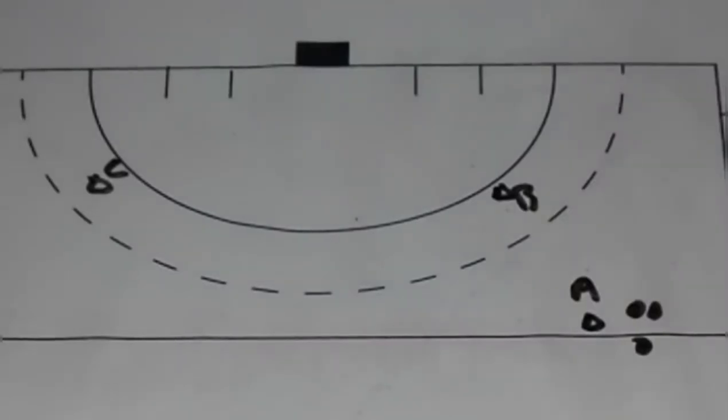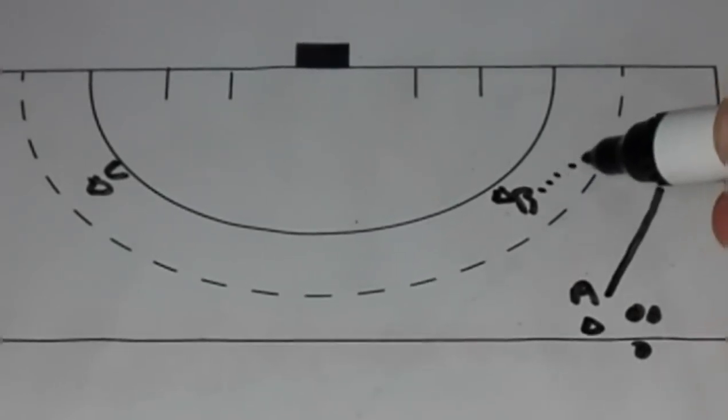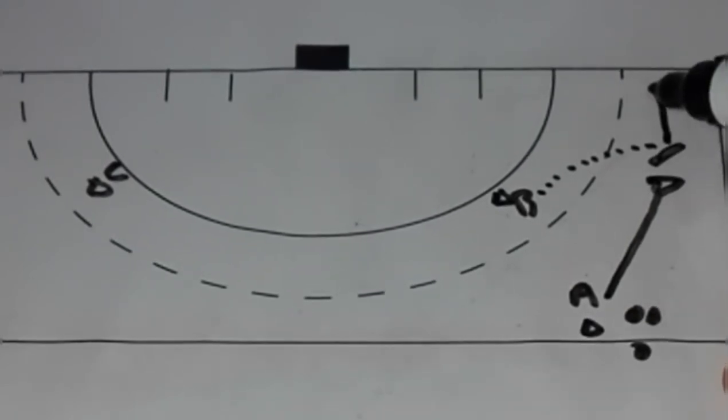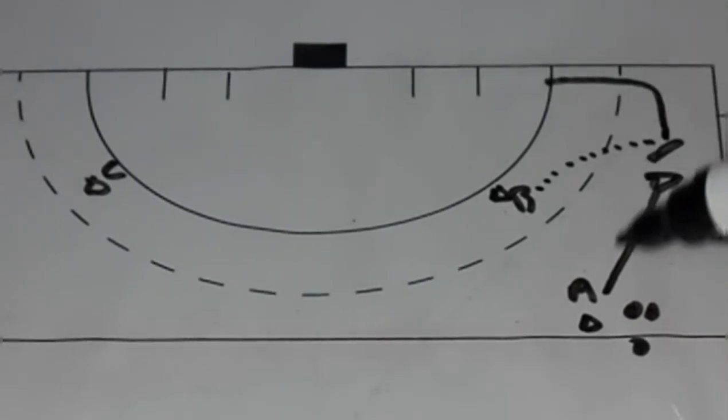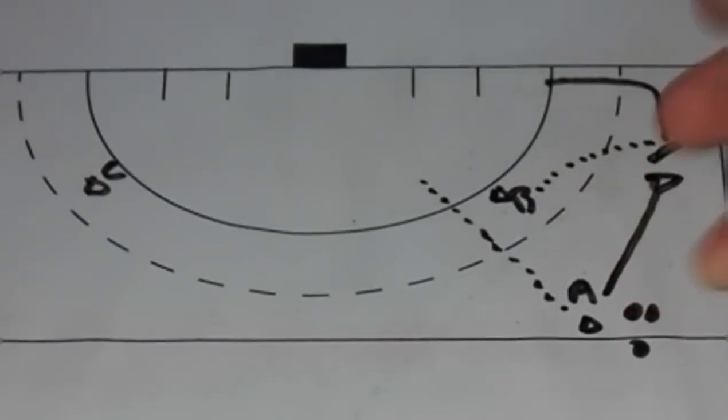One of the variations you can do is player A passes the ball there. While that's happening player B will run and receive the ball. Player B will then drive to T point entering the circle by T point. A will then follow up into the circle.